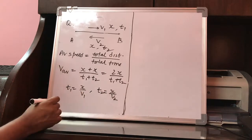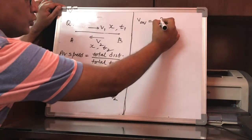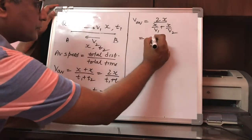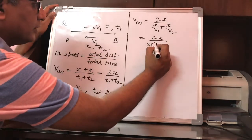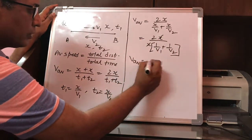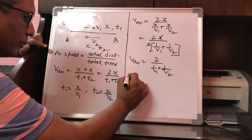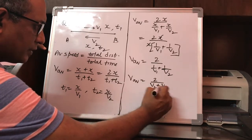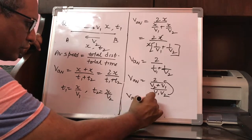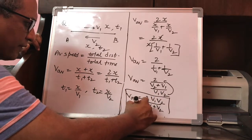Similarly, t2 equals x divided by v2. Substituting, v_average equals 2x upon (x/v1 + x/v2). Taking x as common in the denominator and cancelling with the numerator gives v_average equals 2 upon (1/v1 + 1/v2). Cross-multiplying in the denominator, v_average equals 2v1v2 divided by v1 plus v2.